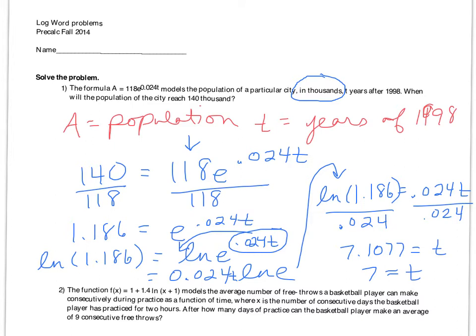So add 1998 to your 7, and it tells you in 2005, that population will be 140,000. You don't like that? No. I like that better than the one that I lasted. Yeah. Well, yeah. I think they're easier. There's less steps on these. So the final answer to the question is 2005.